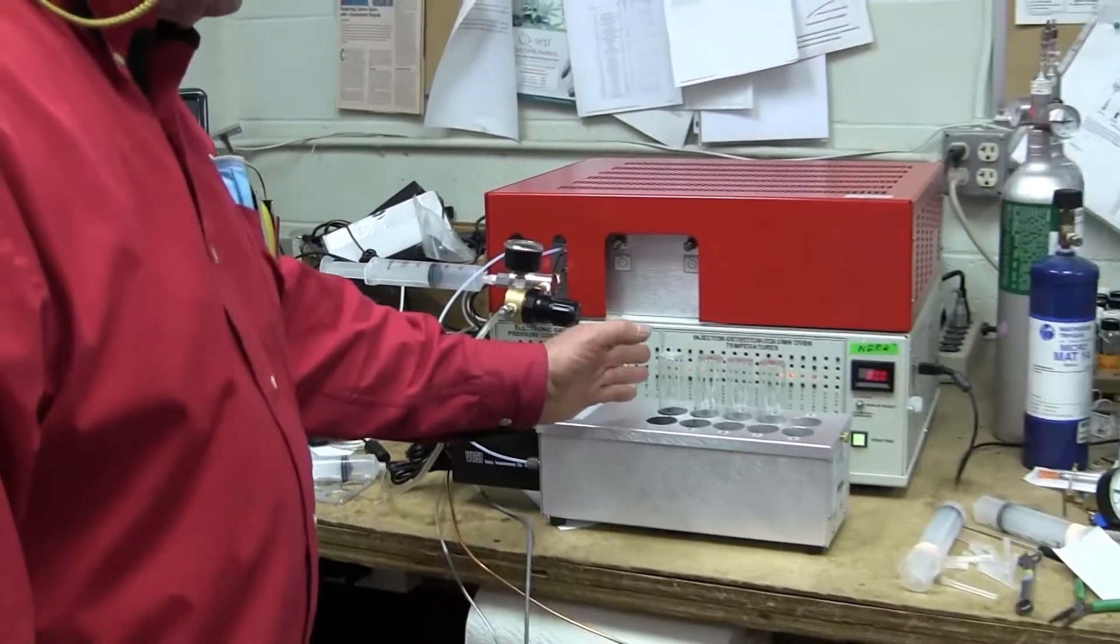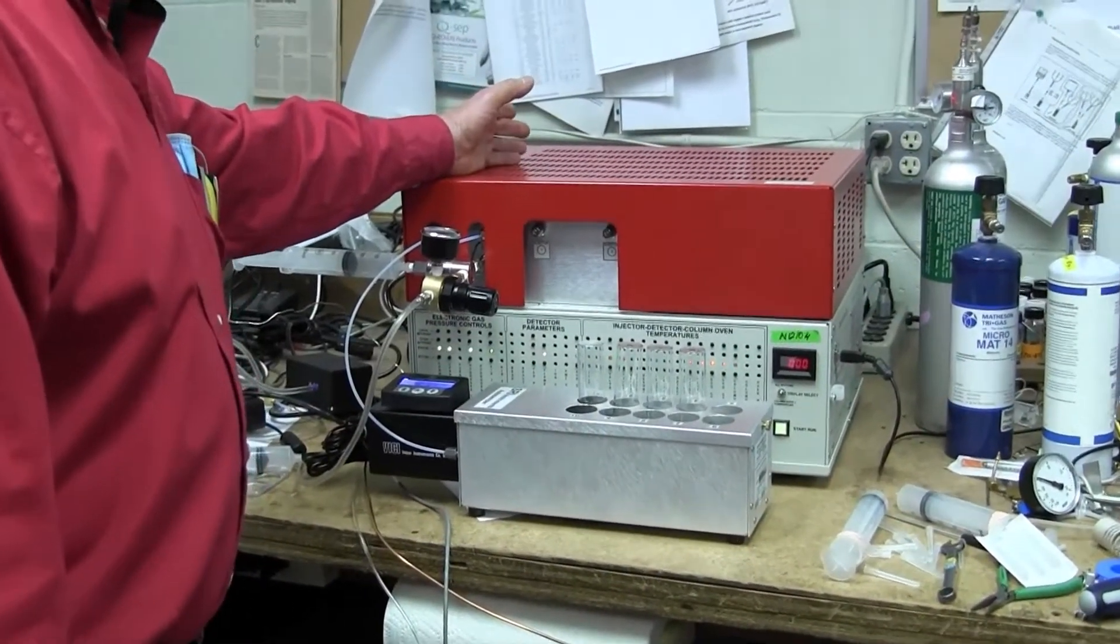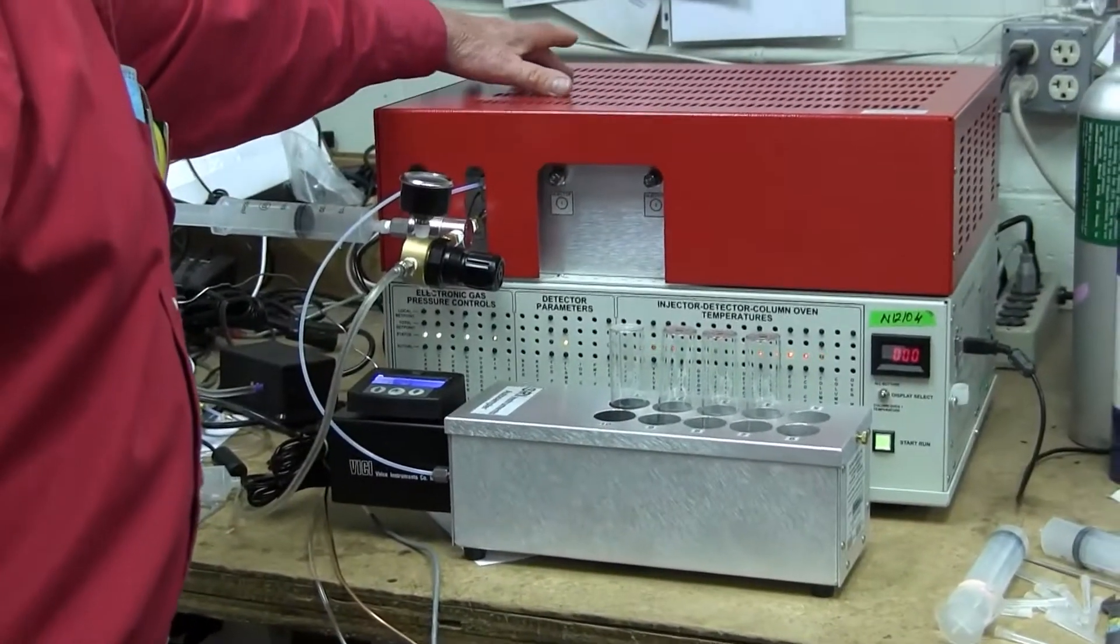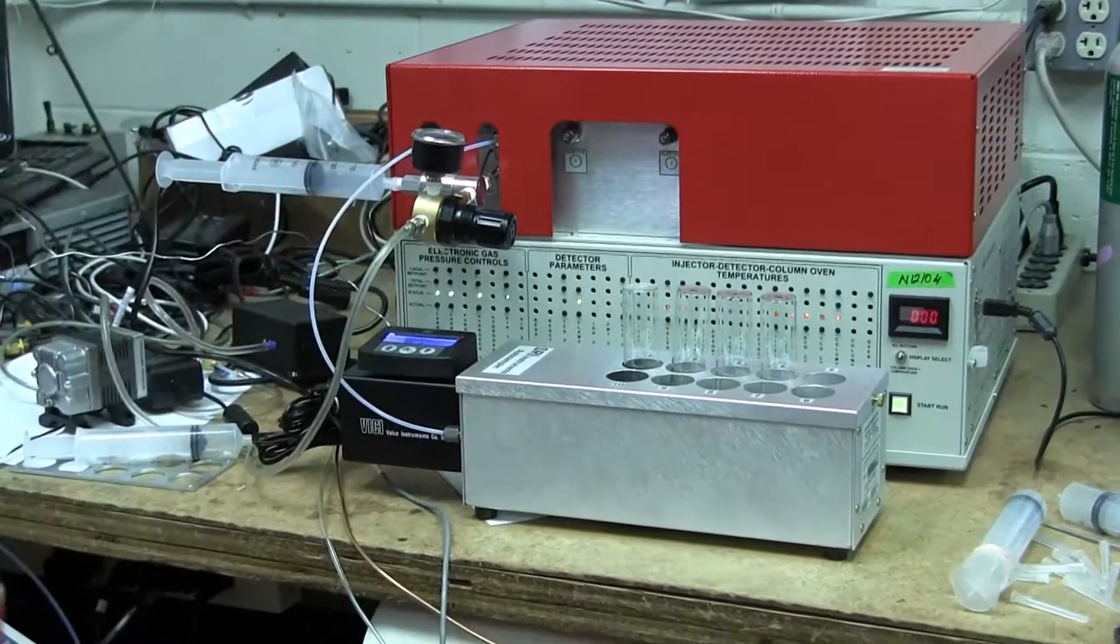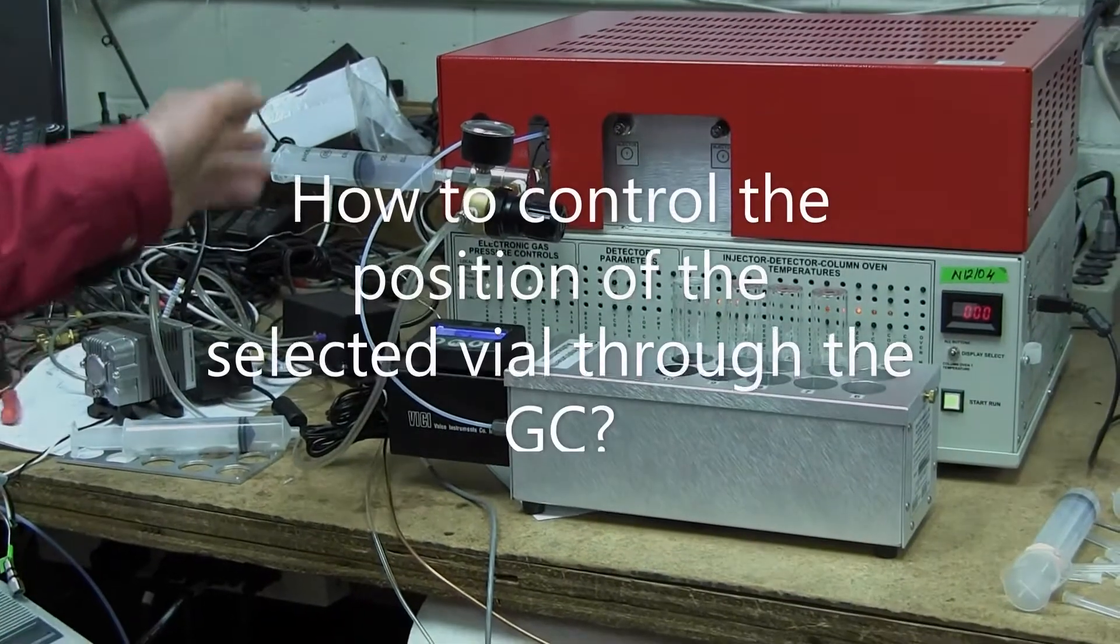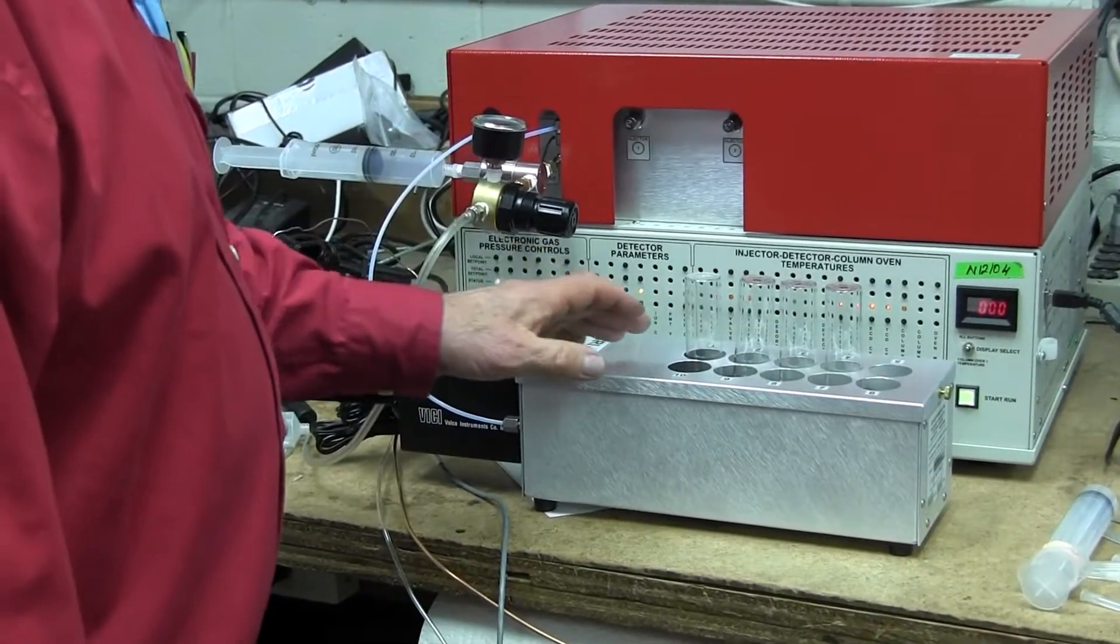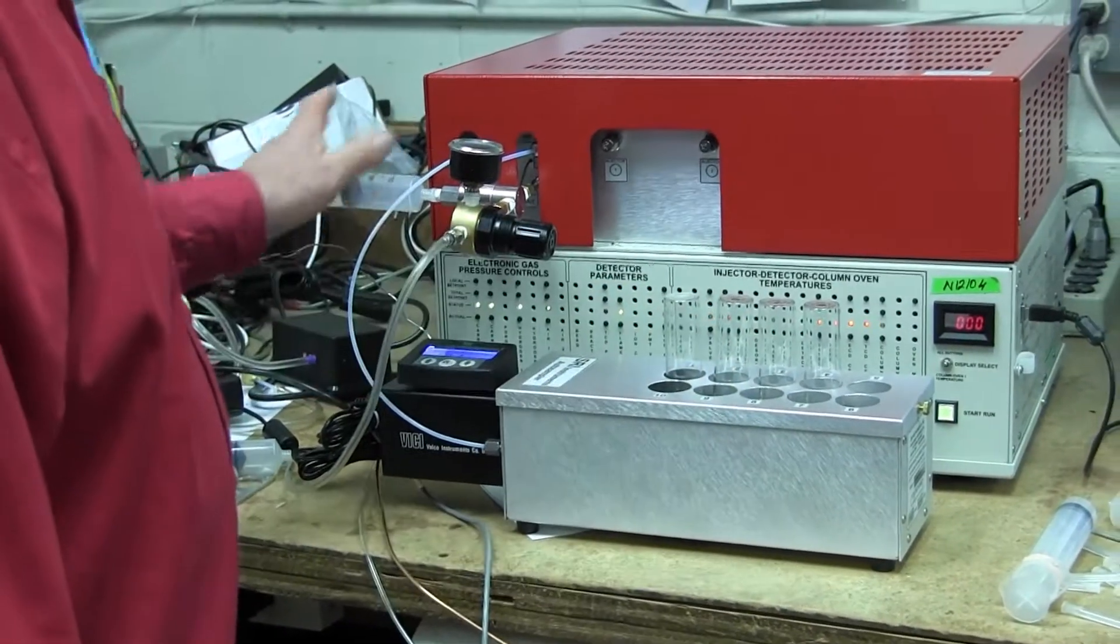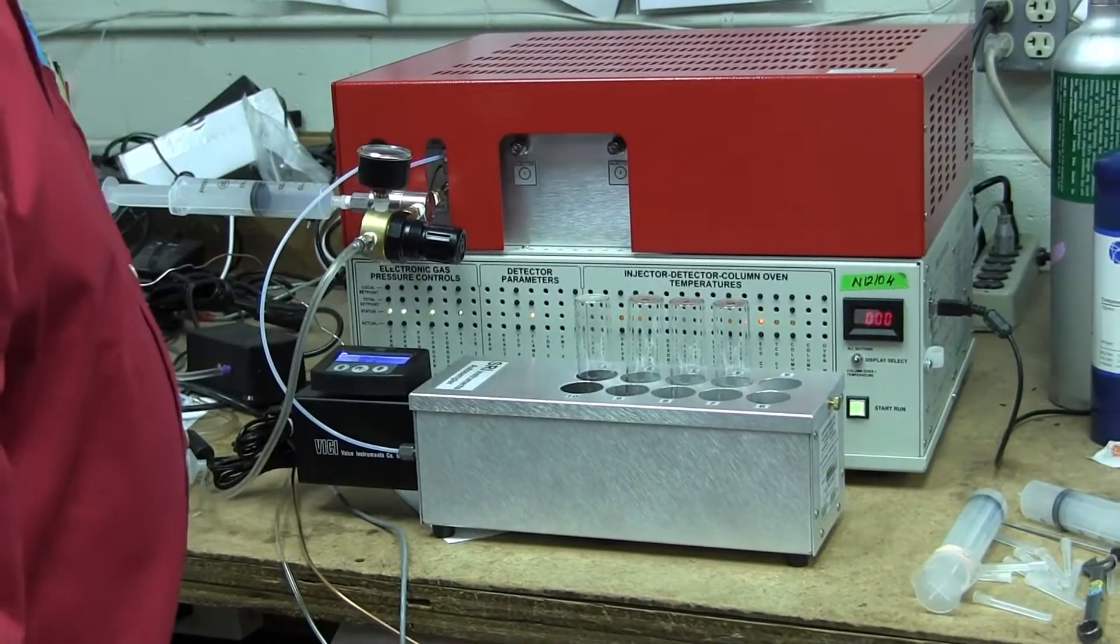So that's how the sample gets from the vial and then into the loop of the gas sampling valve and then when that valve in the GC rotates, whatever's in the loop gets pushed onto the column. So the question is now, how do we avoid contaminating the next vial with the residue of the gas that's in the tubing and all through the system right now?